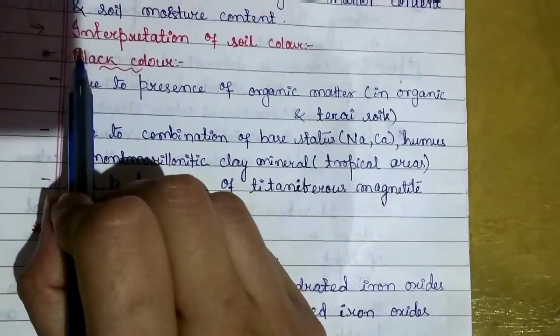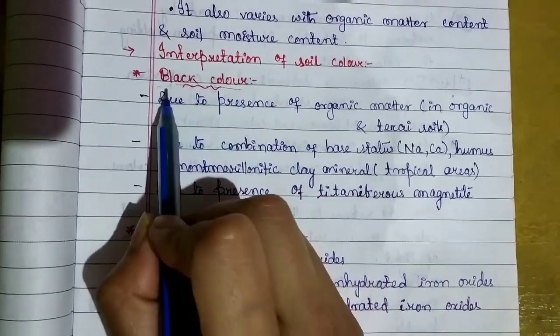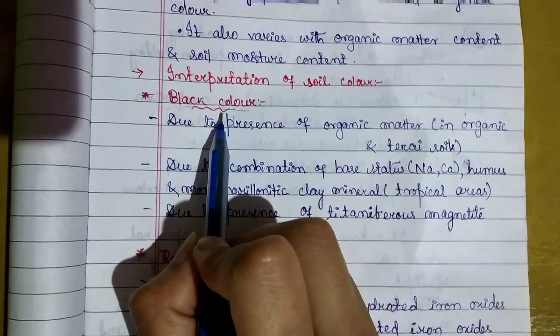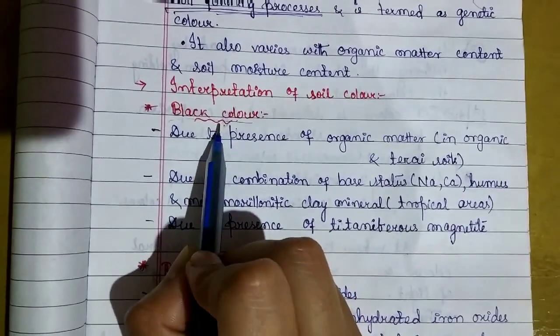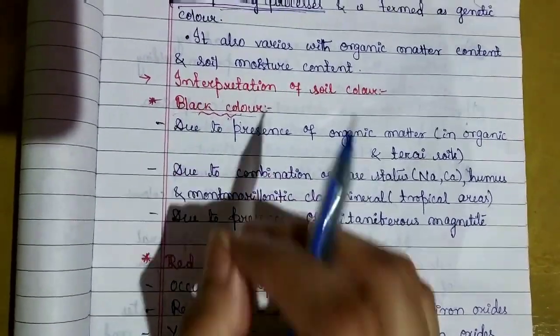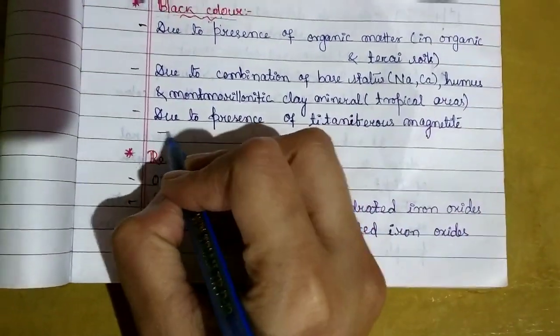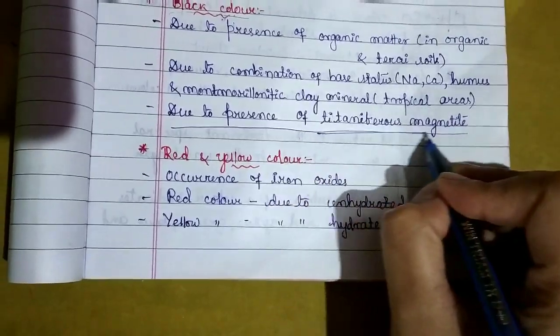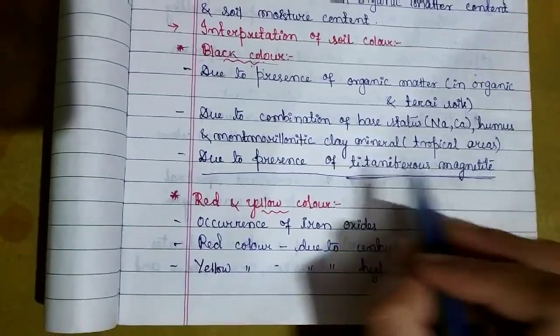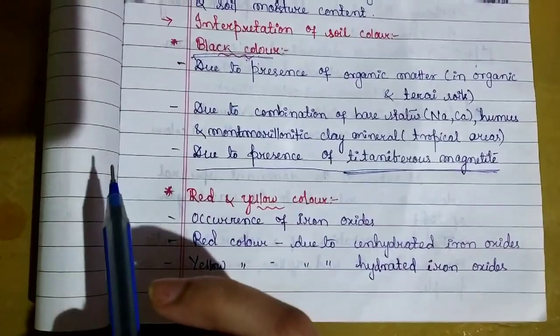Coming to the interpretation of soil color: If you look at a soil in black color, what does it mean? As an agriculturalist or soil scientist, what reason can we give? The main reason is the presence of chemical compounds like titanium, ferrous, and magnetite. Soil becomes black color.